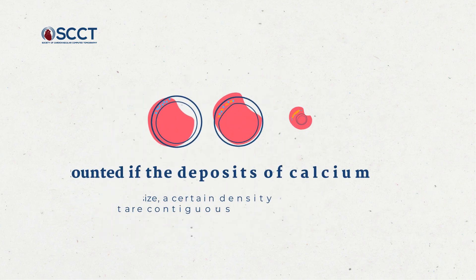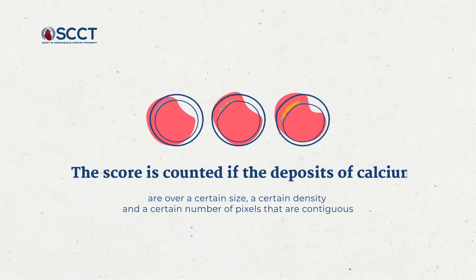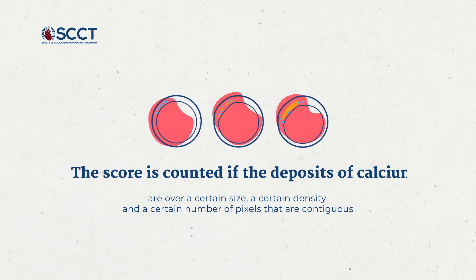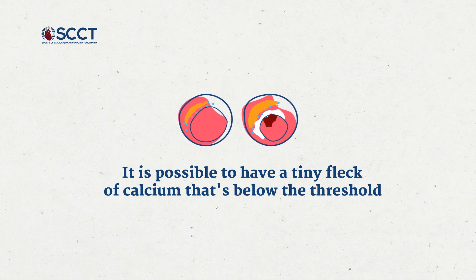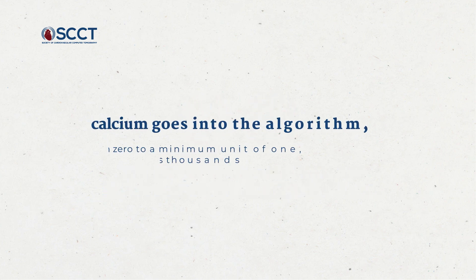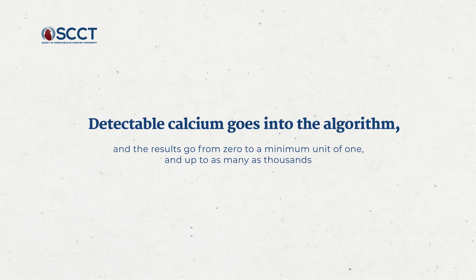The score is counted if the deposits of calcium are over a certain size, a certain density, and a certain number of pixels that are contiguous. It is of course possible to have a tiny flick of calcium that's below the threshold to detect or count. Detectable calcium goes into the algorithm and the results go from zero, as in non-detected, to a minimum unit of one and up to as many as thousands.